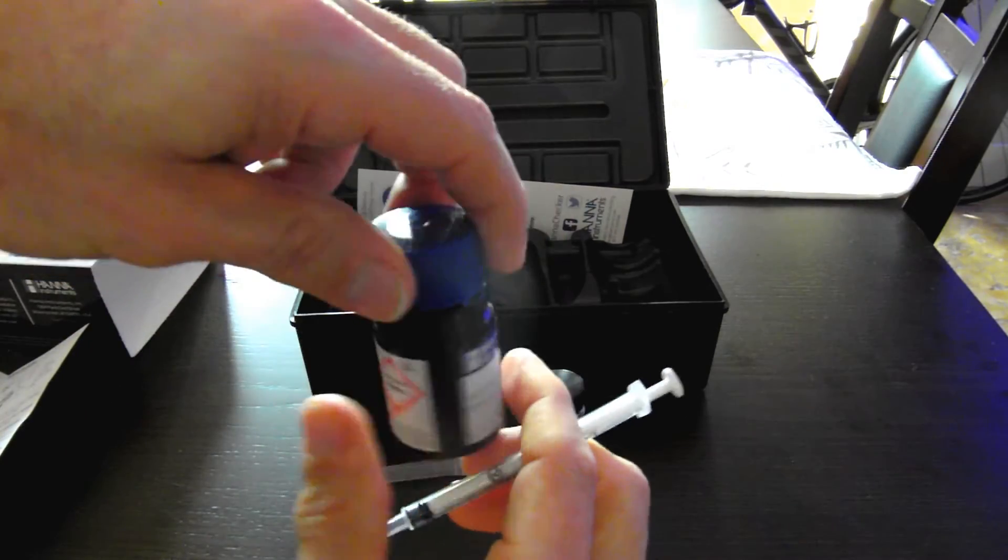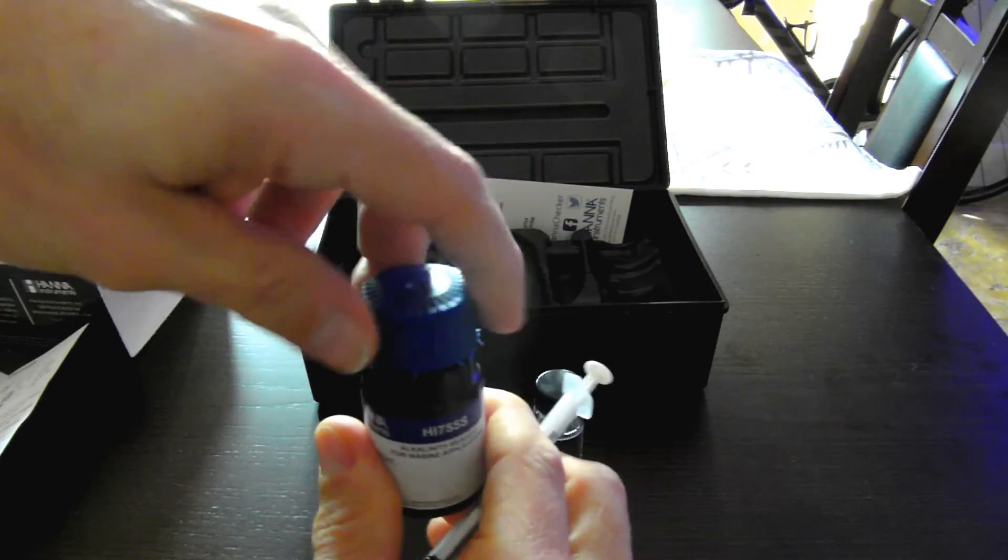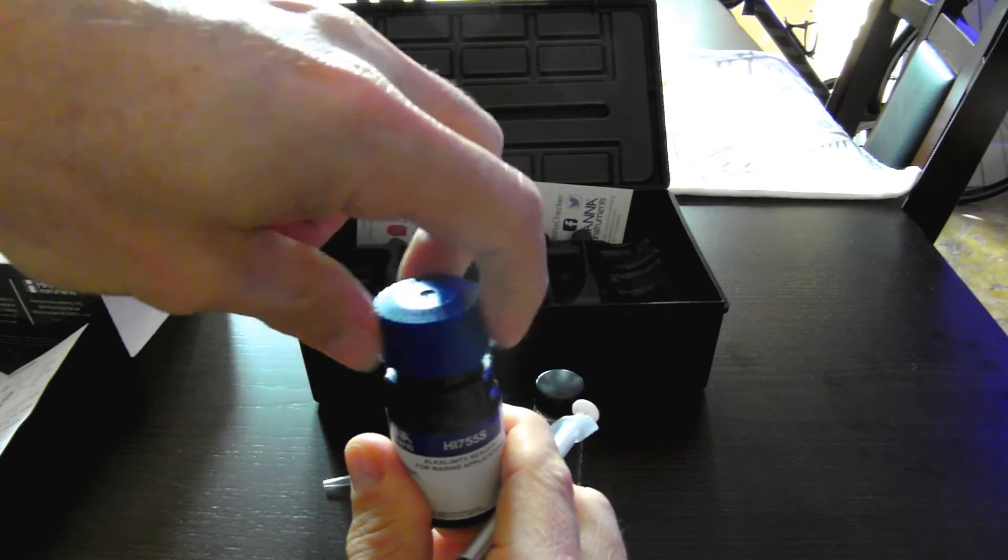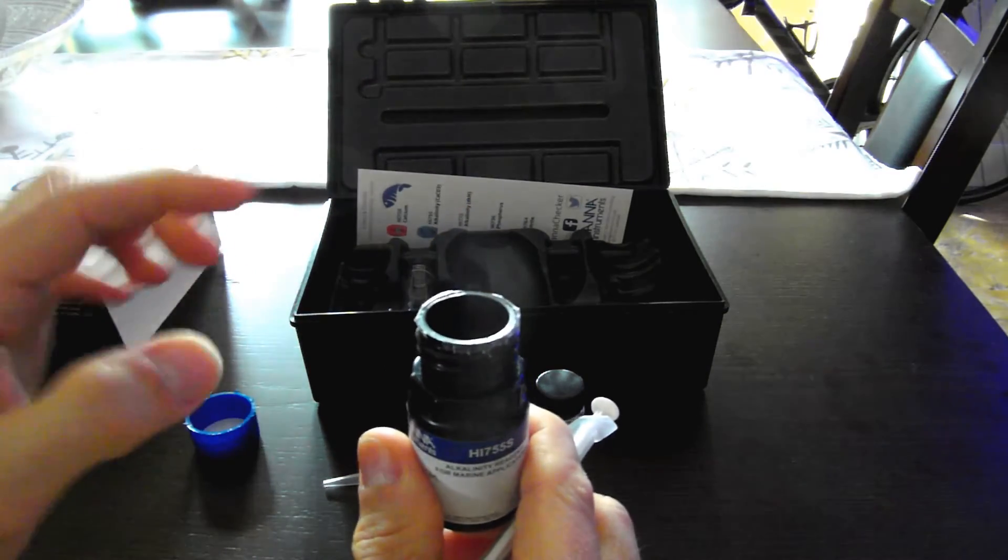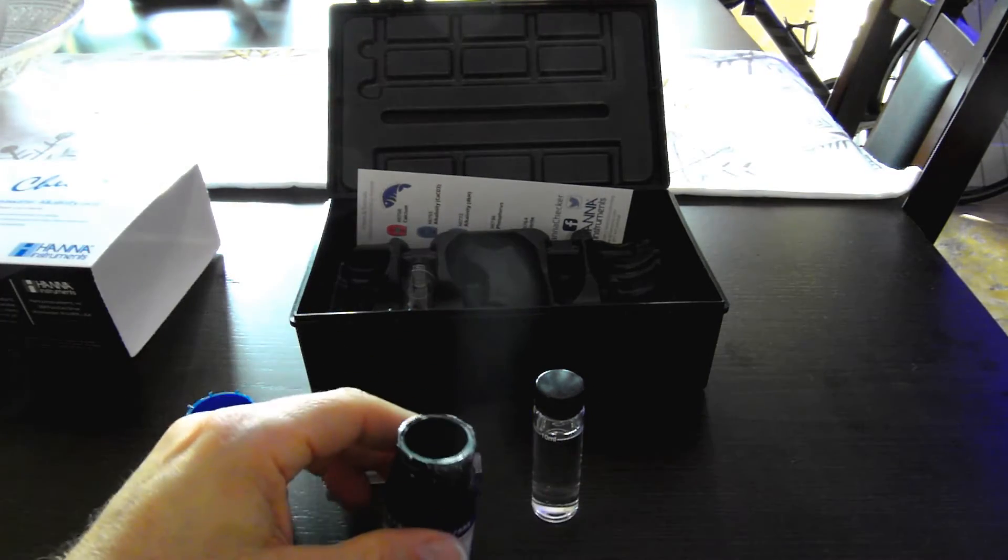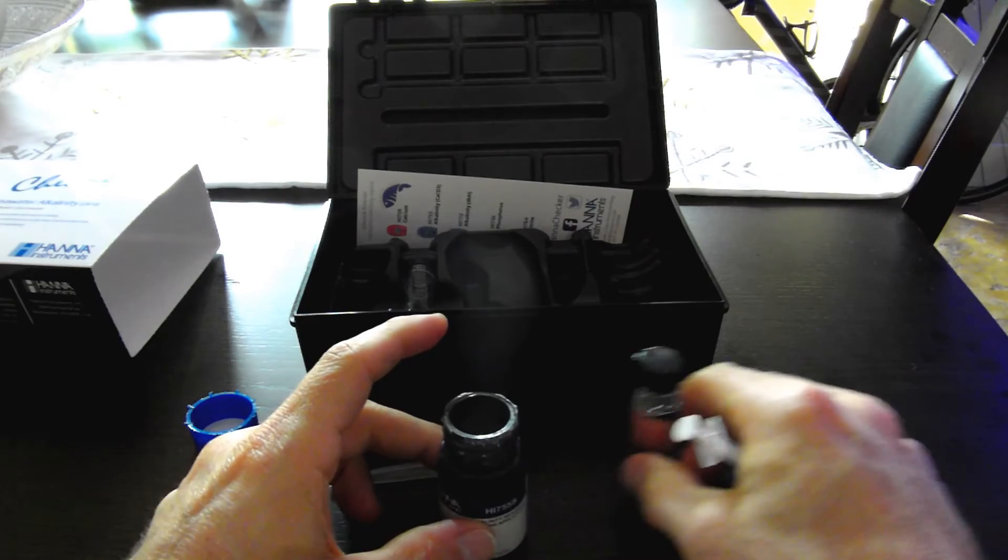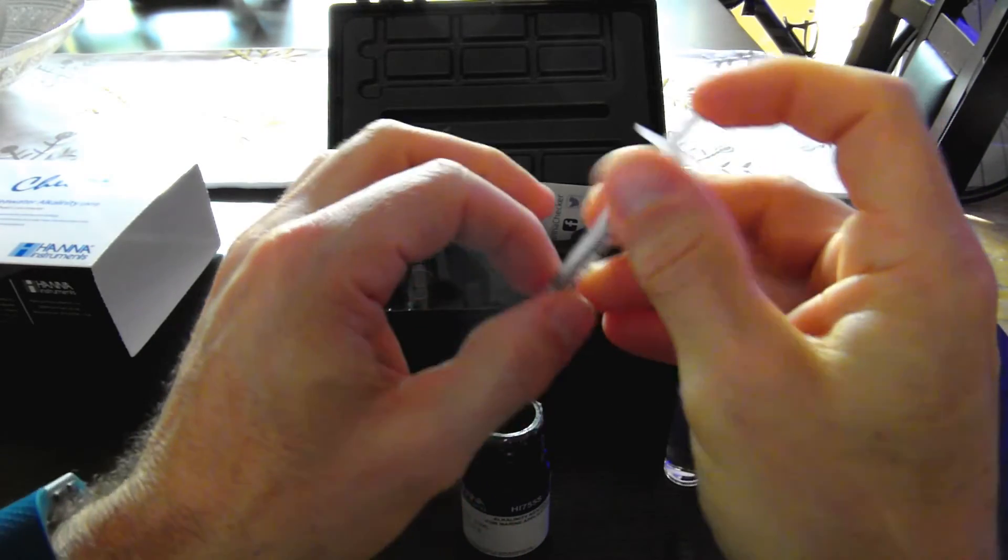Here's the new bottle of reagent. I had to remove the protective ring around the seal around the cap, and also there was some plastic right over the opening. I'll go ahead and draw in 1 milliliter.